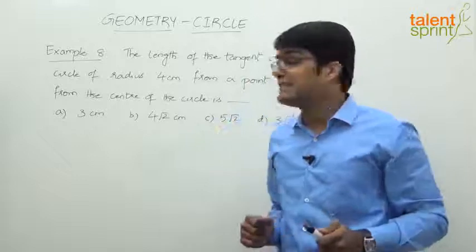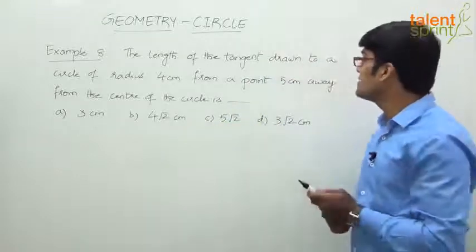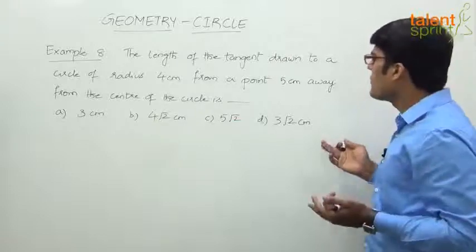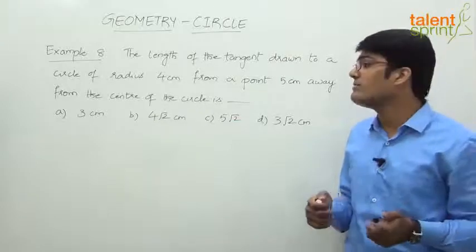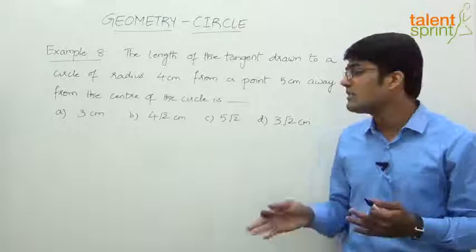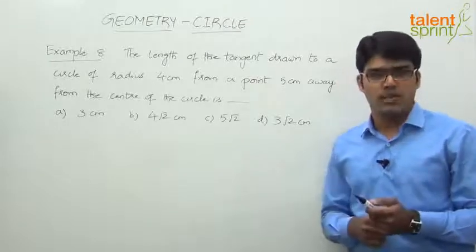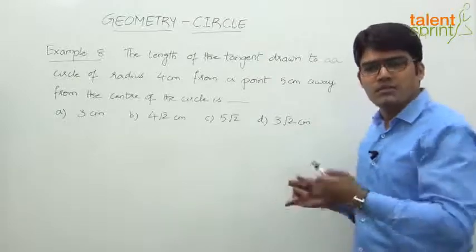Let us now take Example 8. The question says: the length of the tangent drawn to a circle of radius 4 centimeters from a point 5 centimeters away from the center of the circle is: a) 3 centimeters, b) 4√2 centimeters, c) 5√2 centimeters, or d) 3√2 centimeters. That's a very simple question; we just have to find out the length of the tangent.